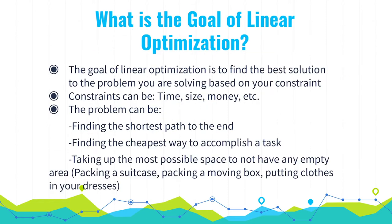What is the goal of linear optimization? The goal of linear optimization is to find the best solution to the problem you are trying to solve, based on what's preventing you from solving that problem. That constraint can be time, size, money, or anything else.